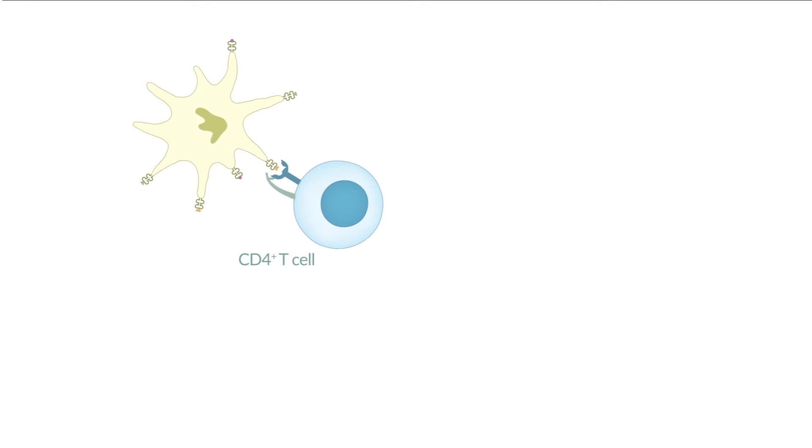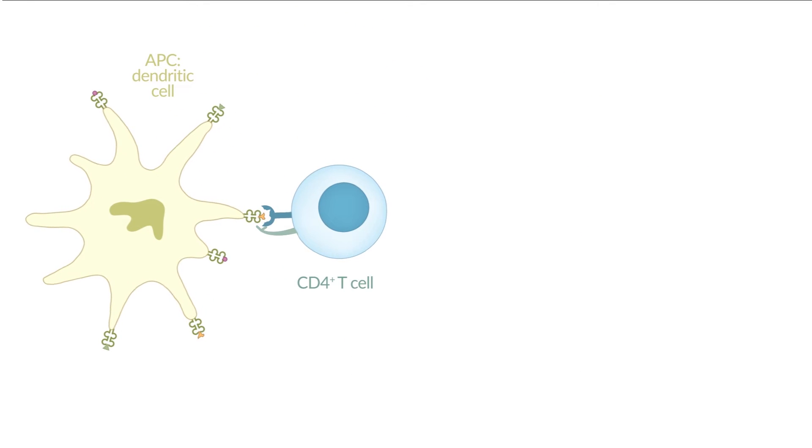Now, let's take a closer look at CD4-positive T cells. The dendritic cell presents the uptaken antigen on its surface via MHC class II receptors to CD4-positive T cells. The corresponding CD4-positive T cell binds via the antigen specific T cell receptor and other auxiliary proteins to the dendritic cell.